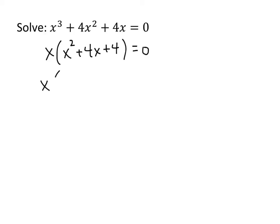And now ignoring the x for a moment, we can factor that quadratic. All we need are two numbers that multiply together to be positive 4 and add together to be positive 4. And what we might realize is that the two numbers we need are positive 2 and positive 2.